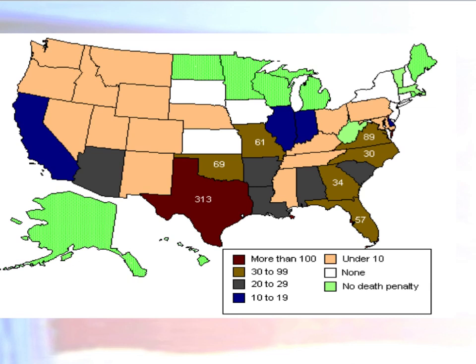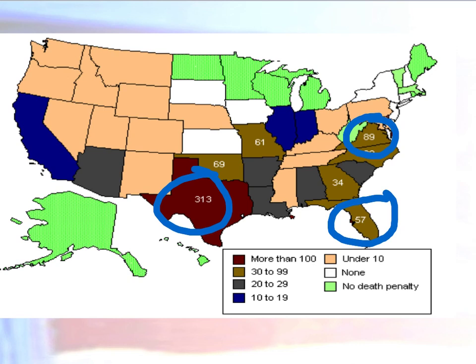This slide shows states with the death penalty and their number of executions. Texas has far more executions than any other state in recent years. Virginia has had 89 executions, which is quite a few. Florida also applies the death penalty regularly. States in green with no death penalty have had zero executions. Texas stands out as having the most executions by far compared to other states.